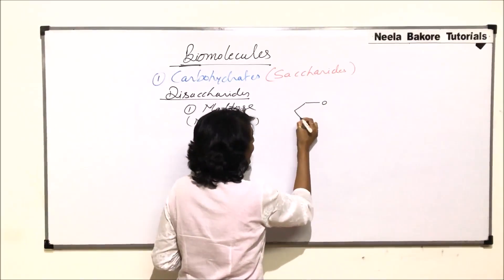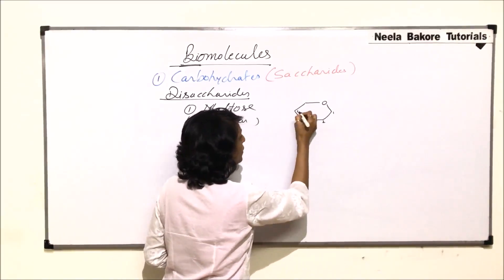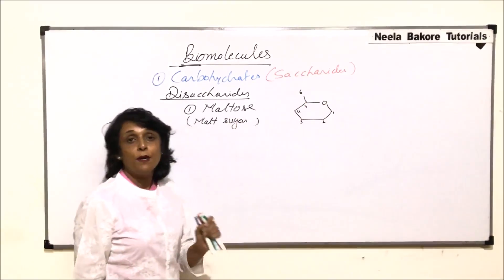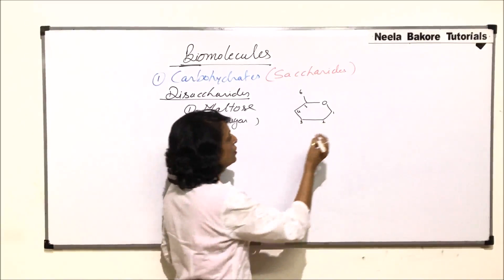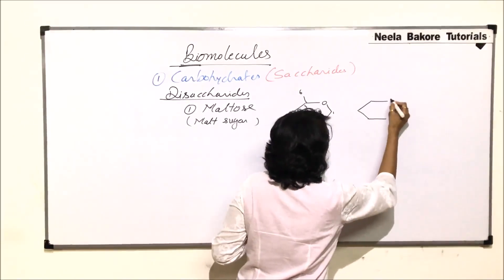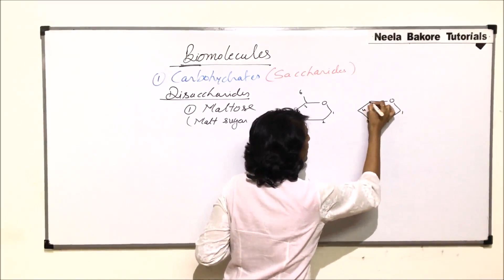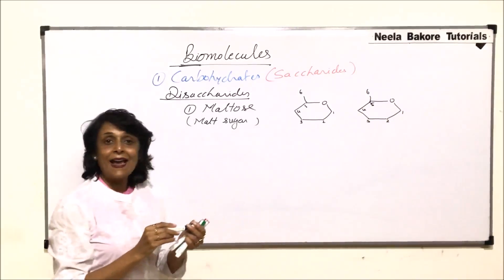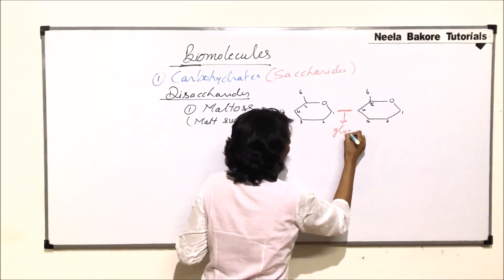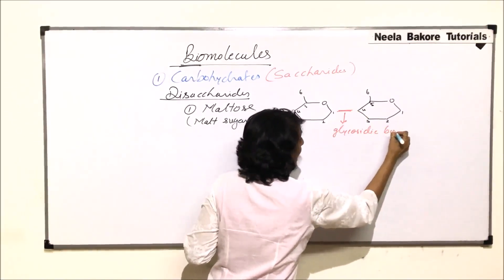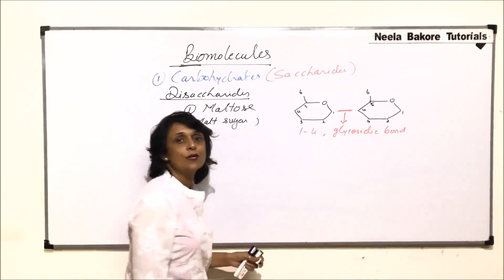The glucose ring is a hexagonal ring and the numbering of carbons is 1, 2, 3, 4, 5, and 6, because the hemiacetal bond was formed between carbon 1 and 5. If this glucose molecule makes a glycosidic bond with another glucose molecule with a similar structure, the carbons are numbered 1, 2, 3, 4, 5, and 6. The glycosidic bond is formed between carbon 1 and 4, so we call it a 1,4-glycosidic bond.